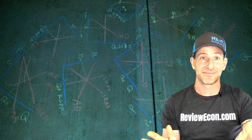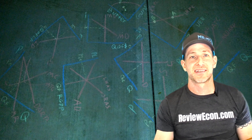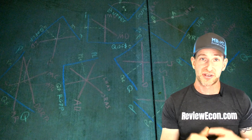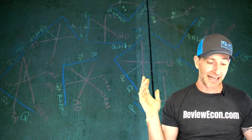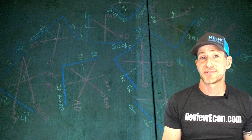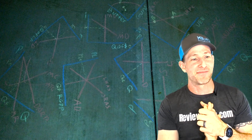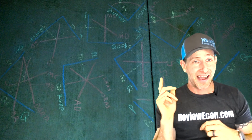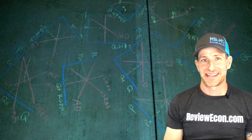Those are my best guess answers for the 2023 macroeconomics exam questions. If you didn't get either set one or set two, there's a chance you got one of the questions that will not be released — that's just the luck of the draw. I'm sure you did great. Scores come out sometime in the summer. Thank you very much for supporting ReviewEcon.com. Take care, see you next time.